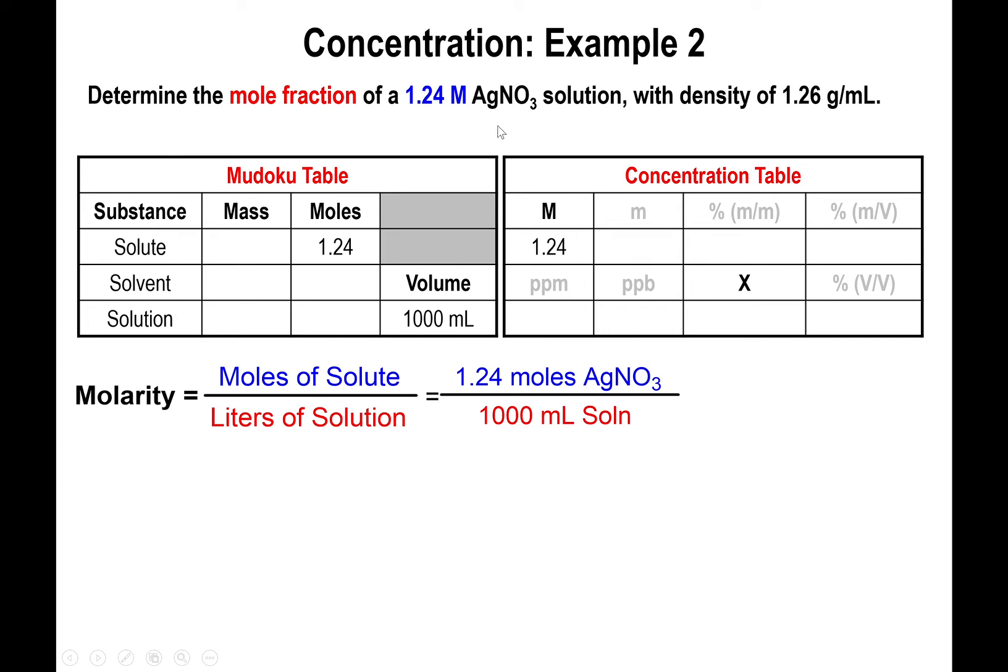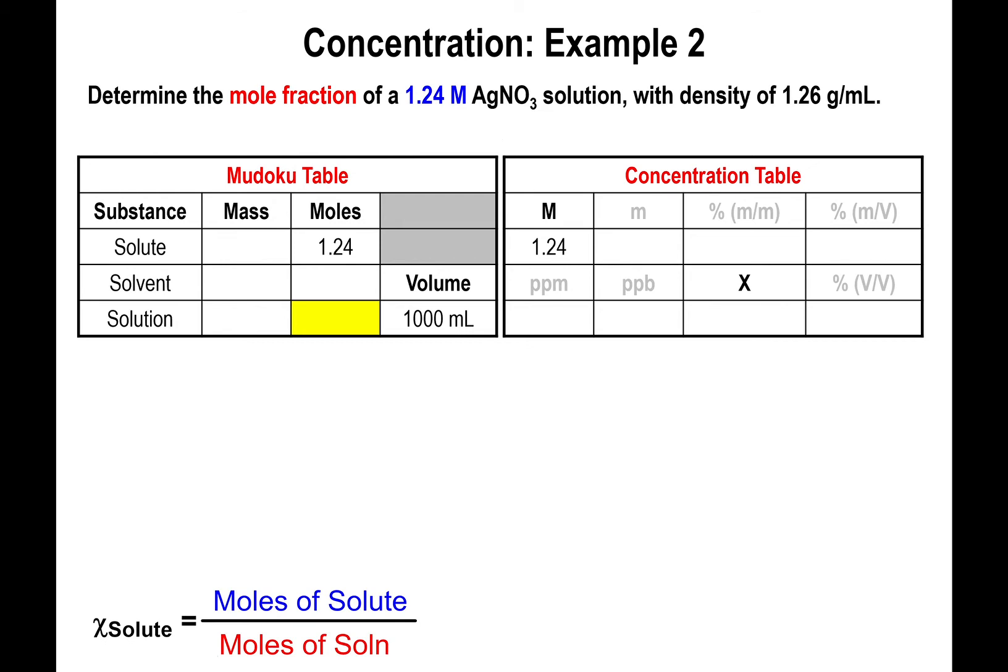Silver nitrate being the actual substance, and just for reference, for mole fraction we need moles of solute and moles of solution. Right now we have the moles of solute. We need to find the moles of solution next. So the only thing we can do right now is to switch from moles to mass for the solute, which is what I was getting at before.